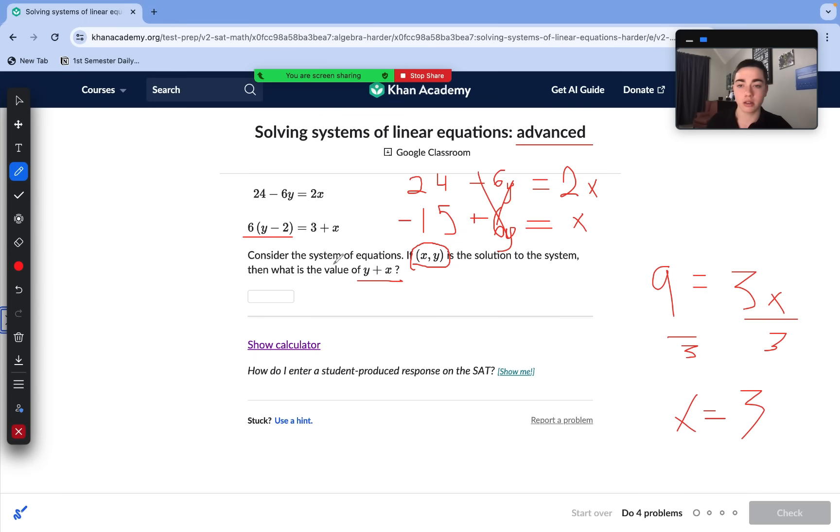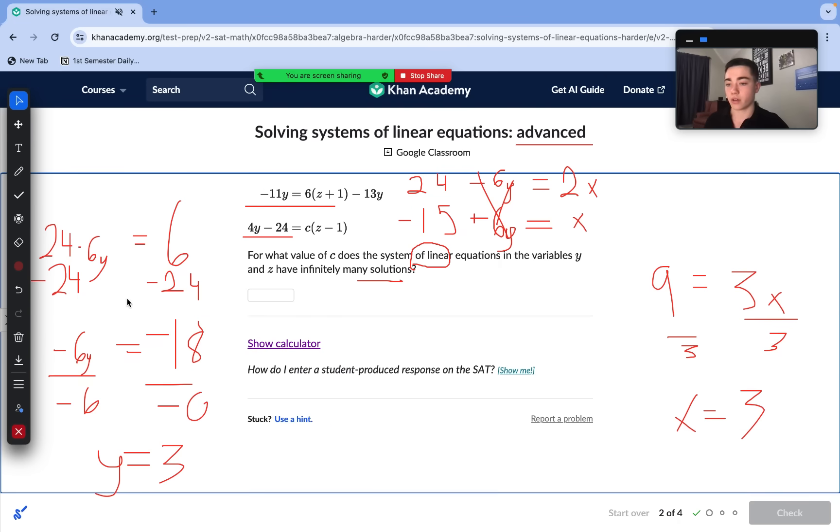So we have our x value. We can just substitute back into the first equation to find our y value. So 2x just turns into 6. 2 times 3 is 6. 24 minus 6y. We subtract 24 from each side. 6 minus 24 is negative 18. So we're left with negative 18 equals negative 6y. We divide both sides by negative 6. Negative 18 divided by negative 6 is also 3. So y equals 3. x equals 3. 3 plus 3 is 6. So that's our answer for this first question.